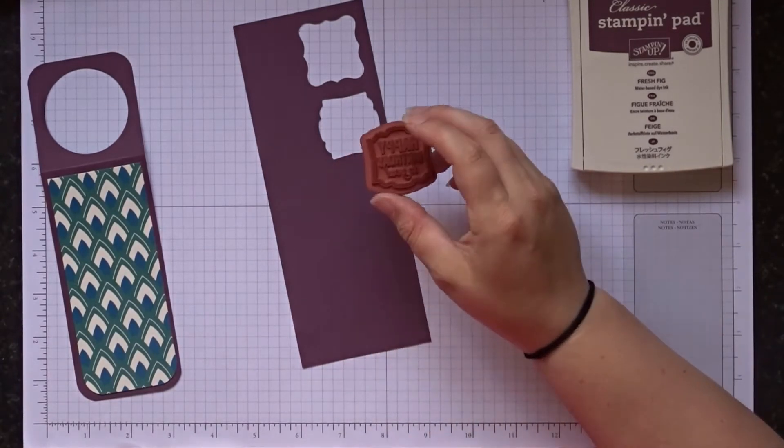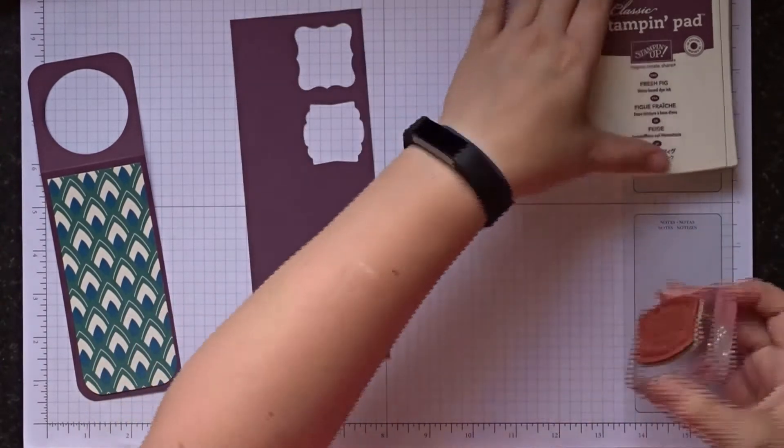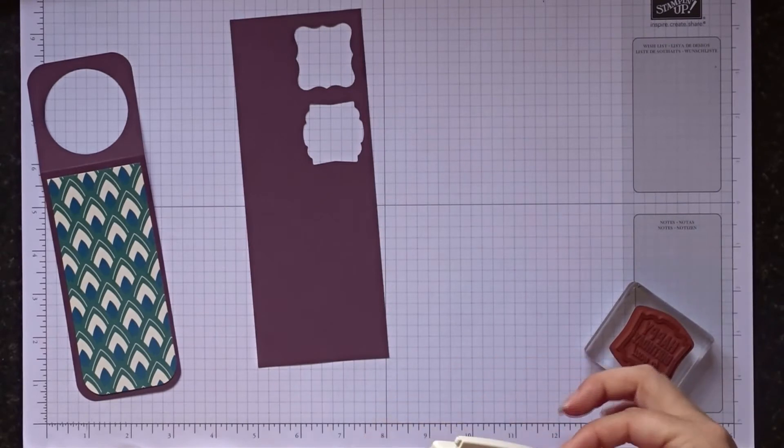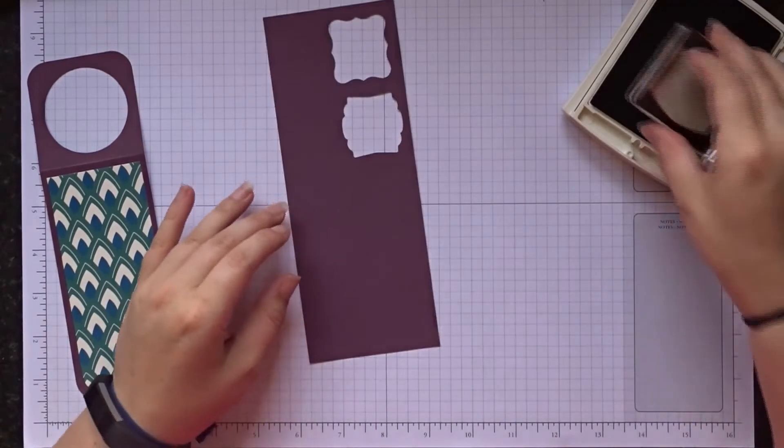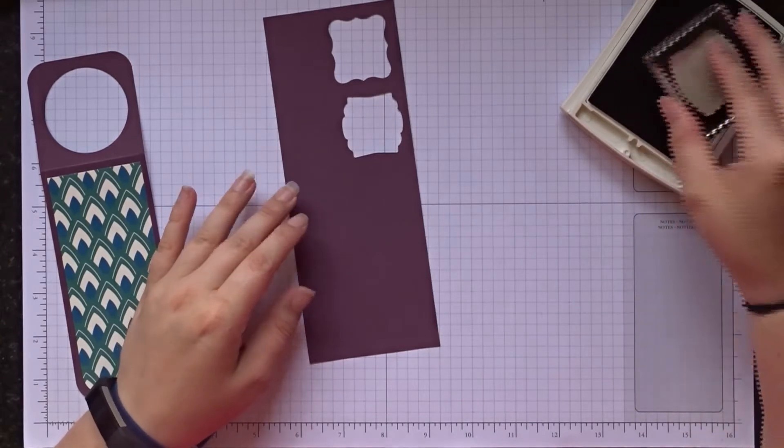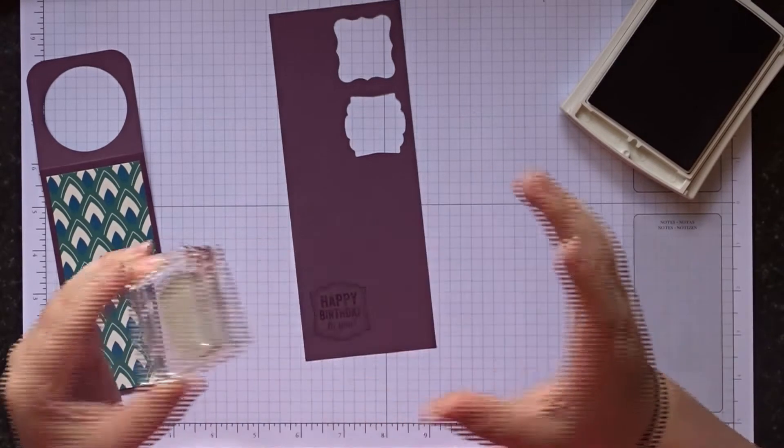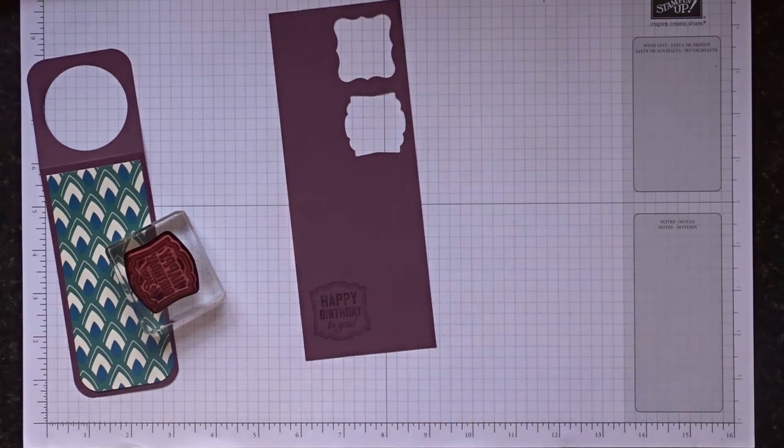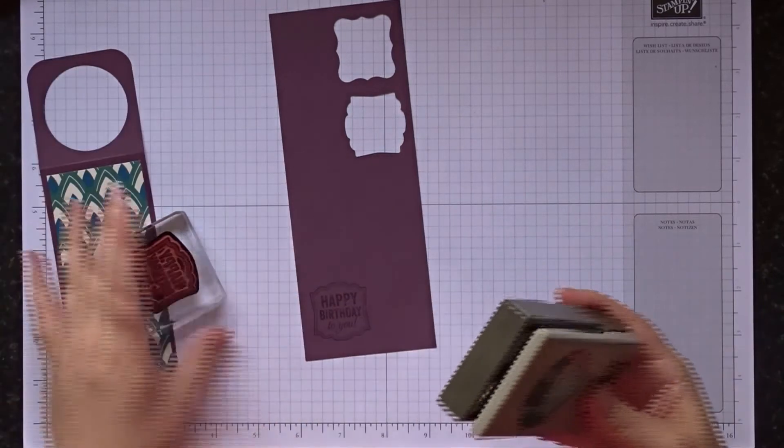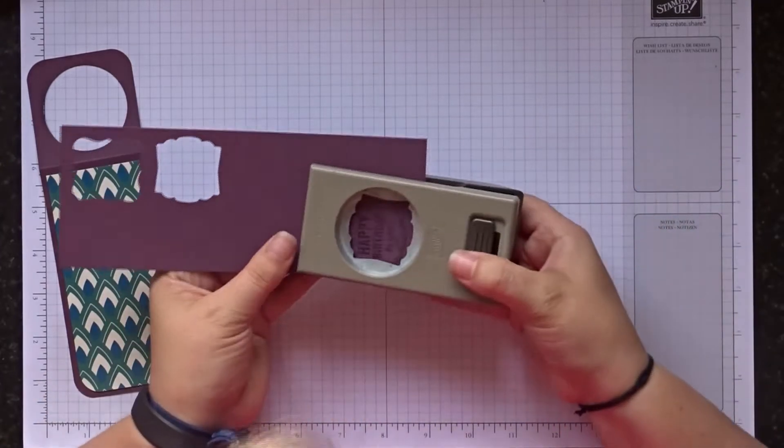Then get to your block. I've got the C block. I'm just going to stamp. And then use your coordinating punch. Line it up and punch it out.